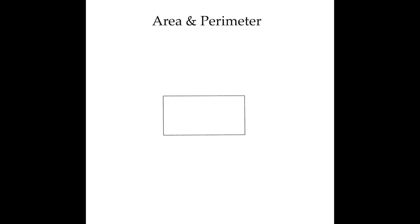Today we're going to continue with our lessons on area and perimeter, but we're going to move on to slightly more complicated examples where we get given slightly different or missing information that we need to figure out, as well as shapes that are combinations of rectangles, so that we can solve real world problems more effectively.